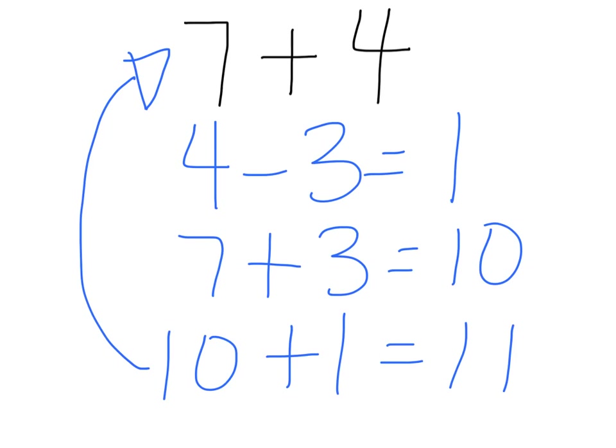This is the abstract phase where students need to quickly recall the combinations that make 10 and picture in their mind what is happening when they make a friendly 10. Students need to know this is an effective strategy to use when there is a 7, 8, or 9 in their number sentence.